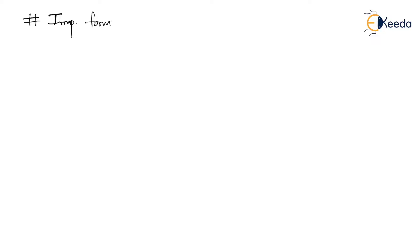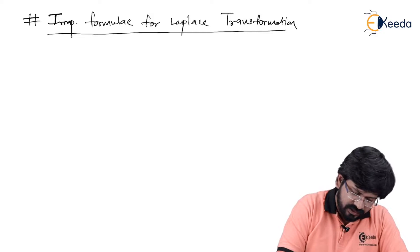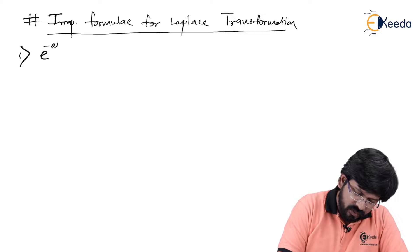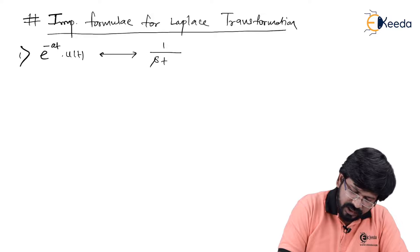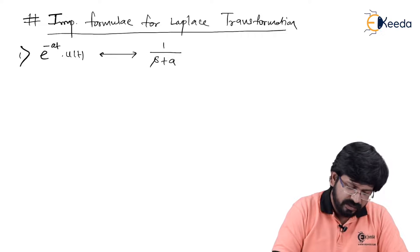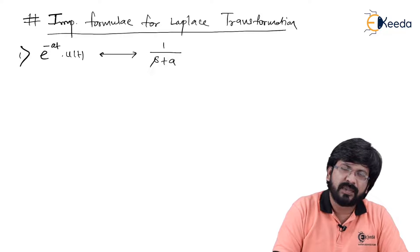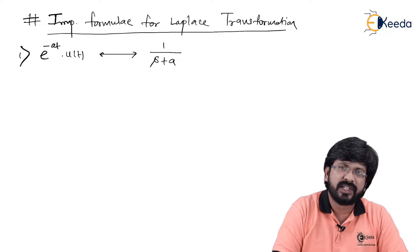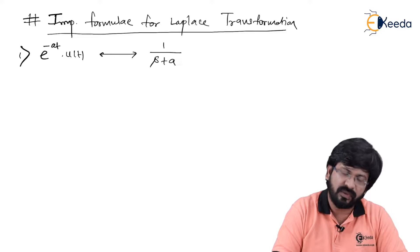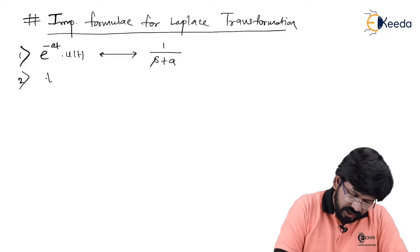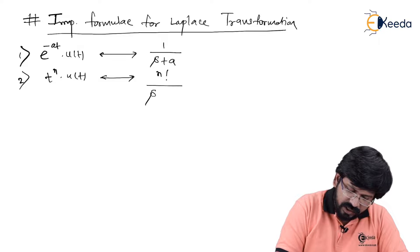Now we will see important formulas required for Laplace analysis. First, e raised to minus at times u of t has Laplace transform 1 upon s plus a. This relation is bidirectional — meaning e^(−at)·u(t) has Laplace 1/(s+a), and 1/(s+a) has inverse Laplace e^(−at)·u(t). Second, t raised to n times u of t has Laplace transform n factorial upon s raised to n plus 1.